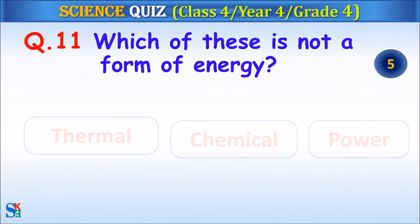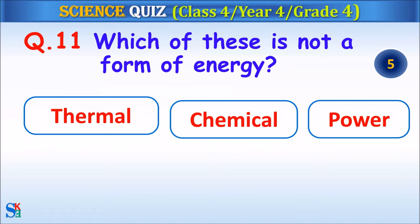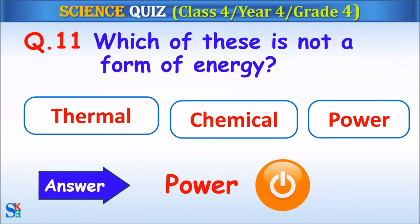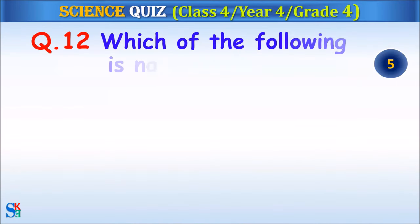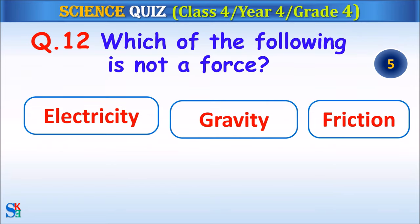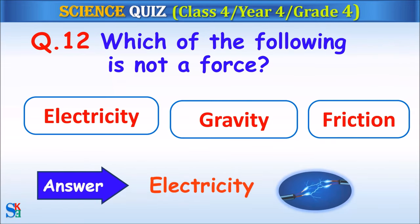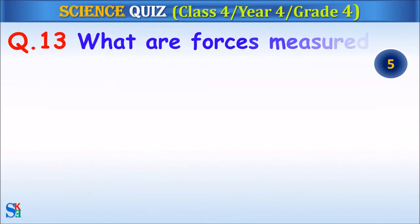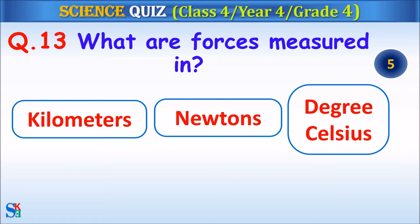Question 11: Which of these is not a form of energy — thermal energy, chemical energy or power? Your time starts. Question 12: Which of the following is not a force — electricity, gravity or friction? Your time starts. Question 13: What are forces measured in — kilometers, newtons or degrees Celsius? Your time starts.